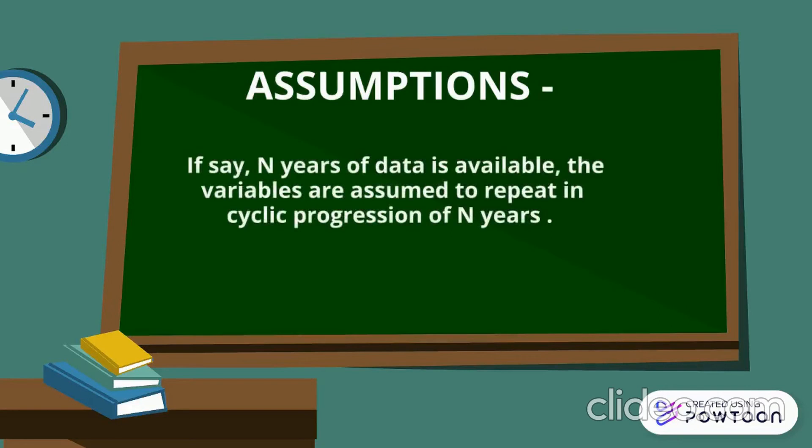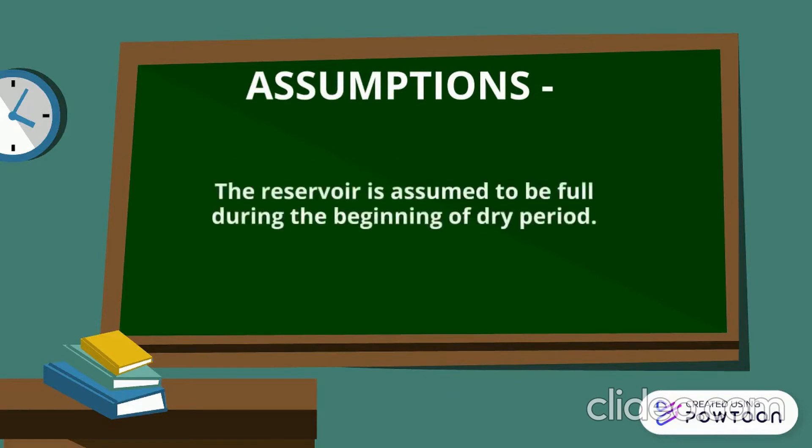If you have the data of inflows and outflows over a period of n years, and if someone prompts to estimate the size of reservoir based on this data, you will first of all assume that this data follows a cyclic progression. So, the pattern of the data will not vary over the next 10 years. And the second assumption says that before the beginning of dry season or dry period, the reservoir storage is assumed to be full.